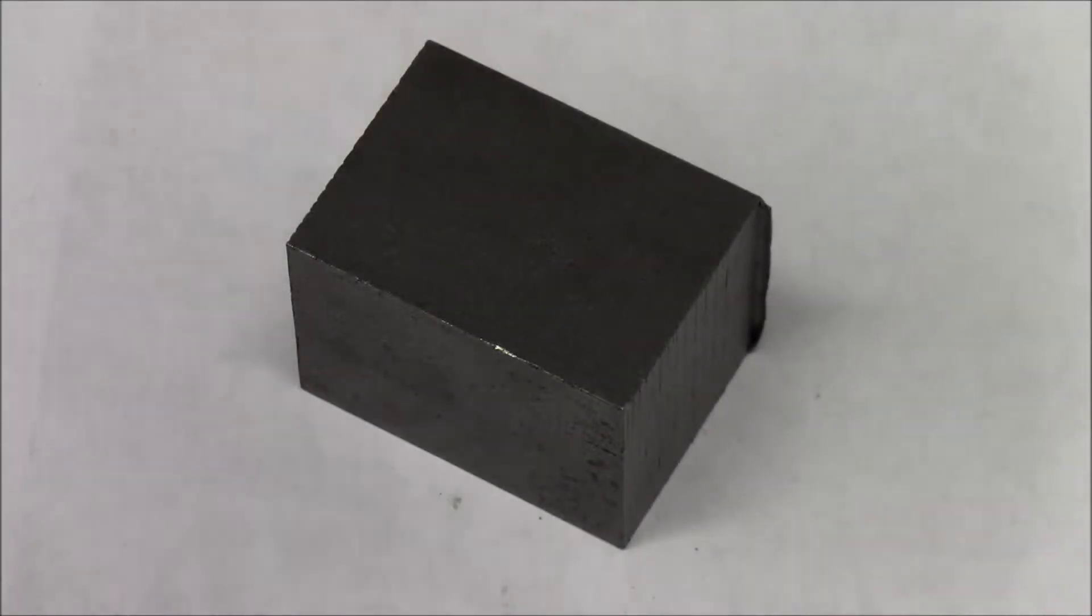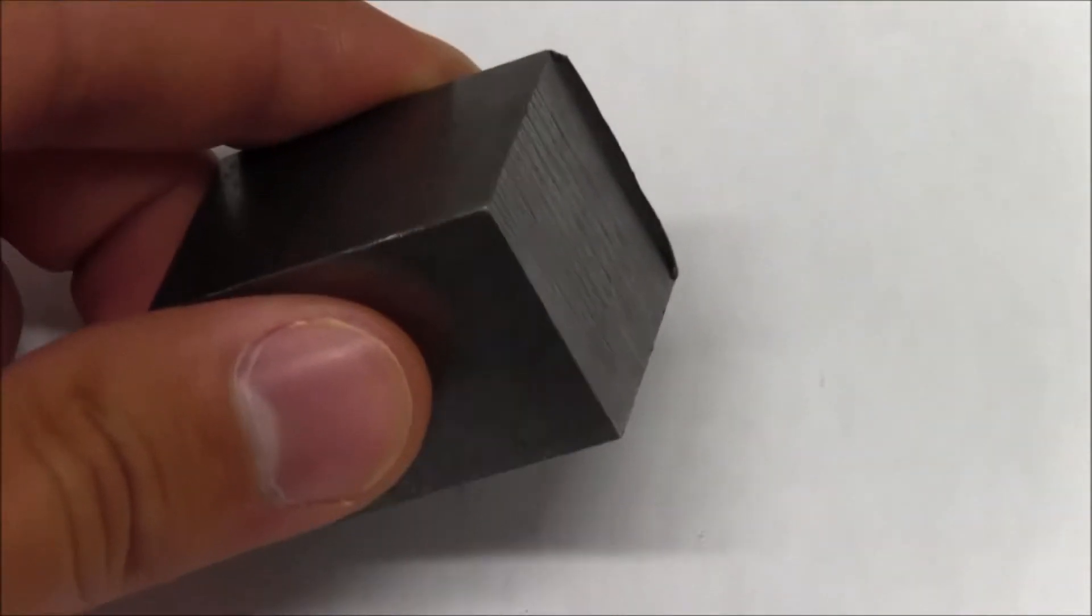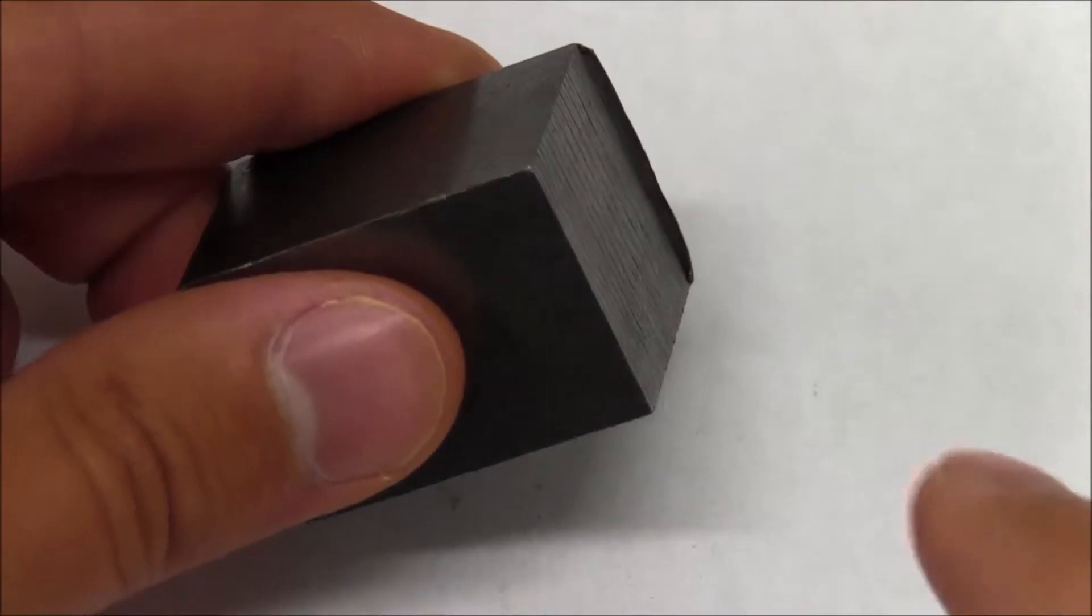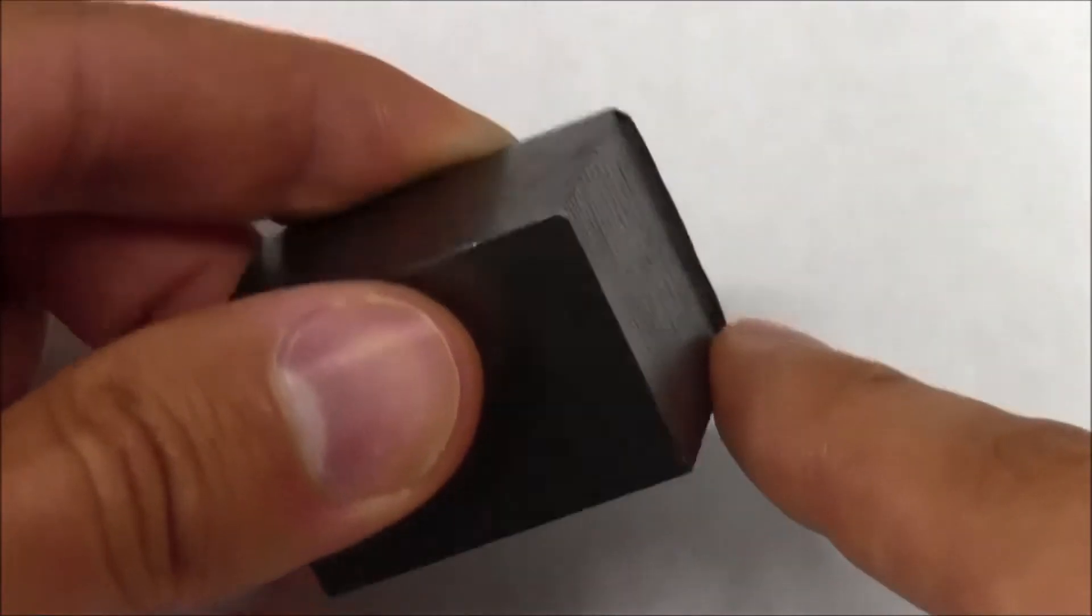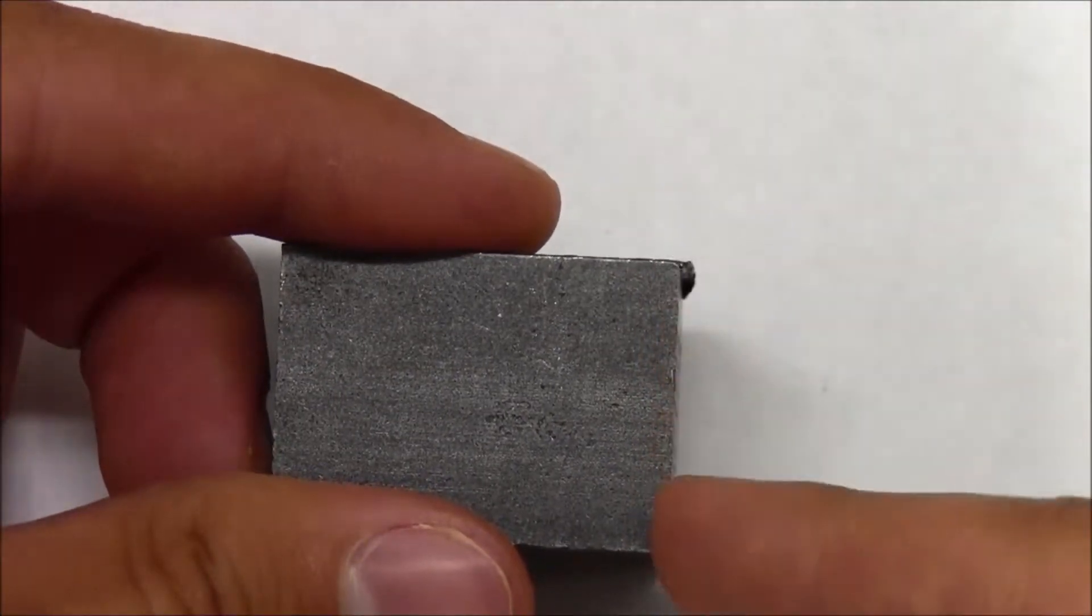Before you can begin laying out your part, you must ensure that one end is smooth and square. As can be seen, the rough cut on this piece of stock did not leave a smooth square surface. There is this lip here, and as you can see, the end is slightly slanted.